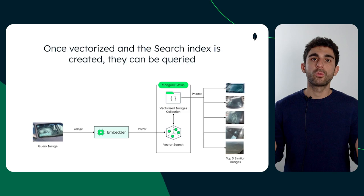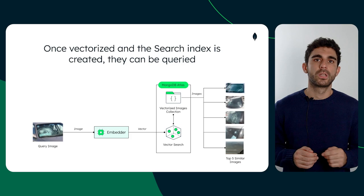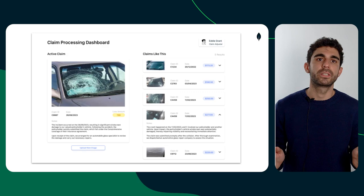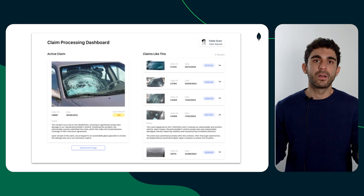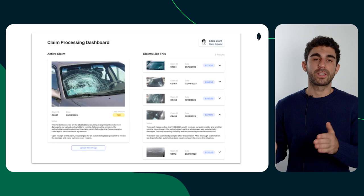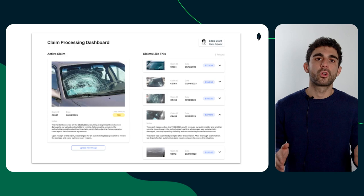This opens the door to many new use cases. If something can be vectorized, now we can query it. So now we can leverage unstructured data that was previously sitting in object storage without much utility. This wireframe showcases how this technology can be embedded in a business process. An adjuster can upload the image of an accident whose loss amount is to be determined. The system quickly pulls all the similar pictures and lists them along with other relevant information stored in the collection. The process is much faster now, as the adjuster can get an overview of comparable claims without having to comb through disparate systems and repositories.